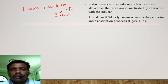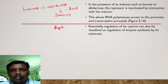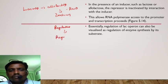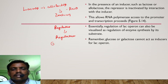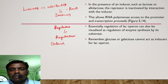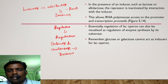In the presence of an inducer such as lactose or allolactose, the repressor is inactivated by interaction with the inducer, as shown in the diagram. This allows RNA polymerase access to the promoter and transcription proceeds. The regulation of the lactose operon can also be visualized as regulation of enzyme synthesis by its substrate. Note that glucose and galactose cannot act as inducers for the lac operon.